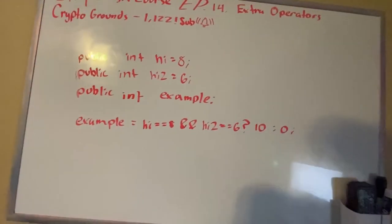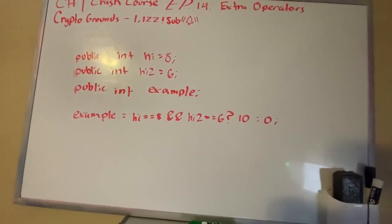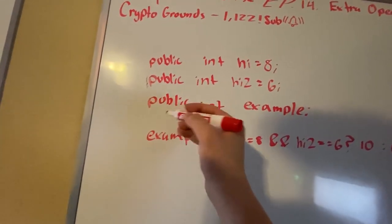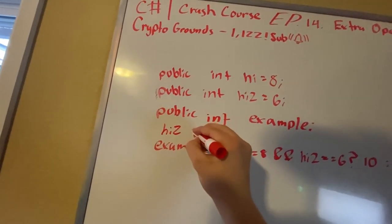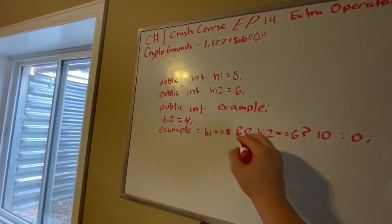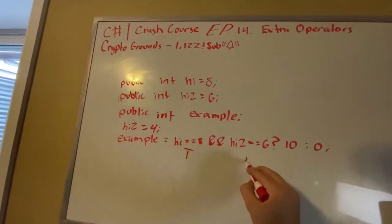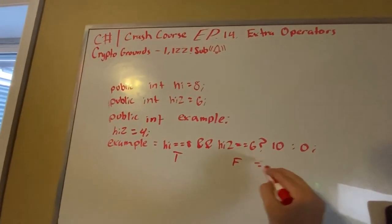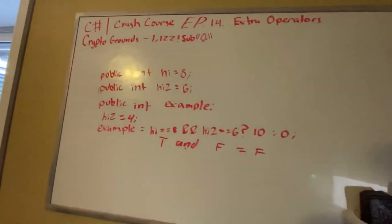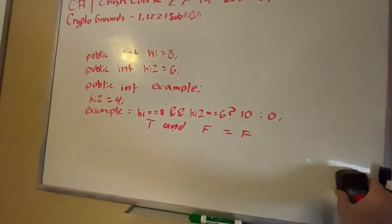Okay, I think that's all. Also, right, let's for example, let's set high two equal to four. So now this is false because this may be true, but this is false, which also makes it false. Okay, which means example will be zero instead of 10.